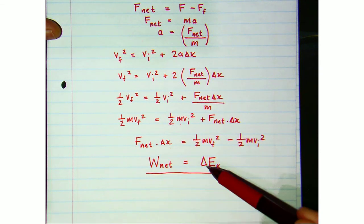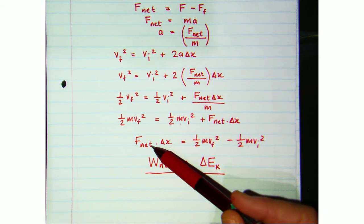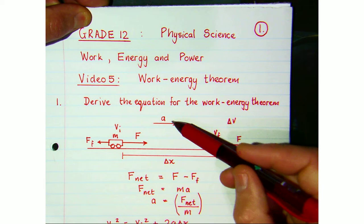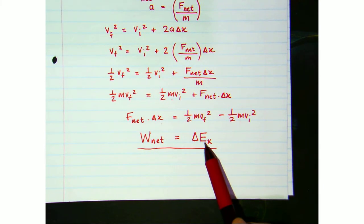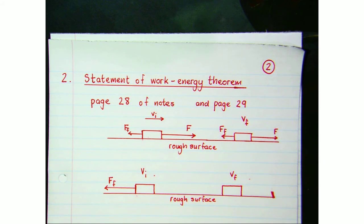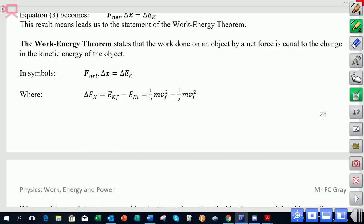We've now derived the work-energy theorem: the work done by a net force equals the change in kinetic energy. Whenever a net force acts on an object, its velocity changes due to acceleration, resulting in a change in kinetic energy. On page 28 of the notes, the formal statement reads: the work done on an object by a net force — it must be a net force — is equal to the change in kinetic energy of that object.